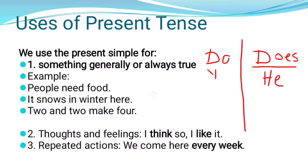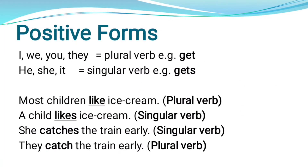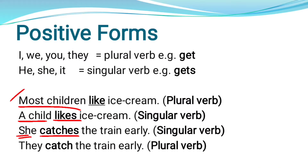Now, positive forms of Simple Present tense. In an assertive sentence, with a singular subject use the verb with 's' or 'es'. With a plural subject, use the base verb. For example: 'Most children like ice cream' — 'like' is the plural verb. 'A child likes ice cream' — 'likes' is singular. 'Aslam catches the train' — singular. 'They catch the train early' — plural.